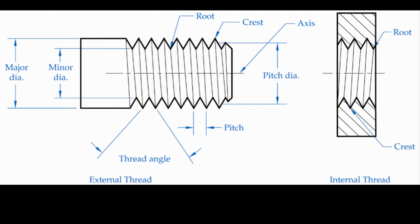The major diameter is the largest diameter of a thread, measured crest to crest across the diameter of the cylinder. On an external thread, the major diameter is on the outside, so when you put calipers on it you get the major diameter. On an internal thread, the major diameter is buried in the part and cannot be measured with calipers — when you measure an internal thread with calipers, you're getting the minor diameter.